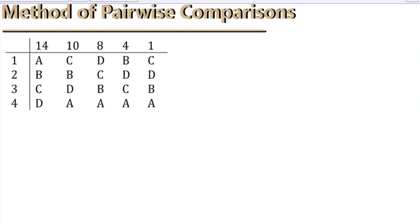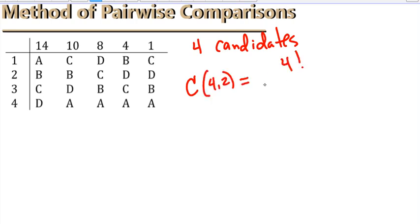So, we have an example here, and if we first start by saying we have four candidates, so how many pairwise comparisons can we make? If you recall, we have a combination of 4, 2.